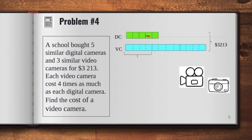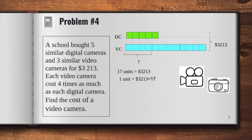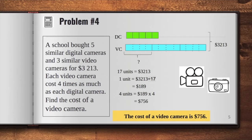Let's solve. Now we can count how many units there are in all — we have 5, 6, 7, 8, 9, 10, 11, 12, 13, 14, 15, 16, 17. So there are 17 units, which is equal to 3,213. And to get one unit, we have to divide it by 17, and this will give us $189. So one unit is equal to $189. And how many units are there for one video camera? There are four units. So we just have to multiply it by four, and this will give us $756. Therefore, the cost of the video camera is $756.